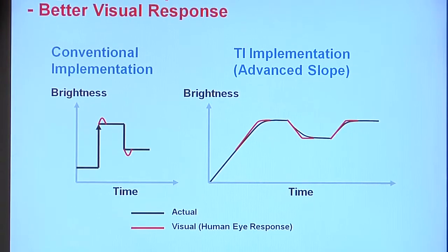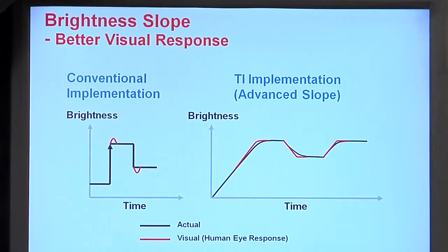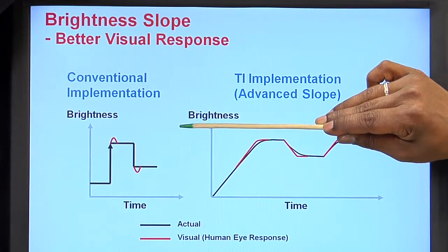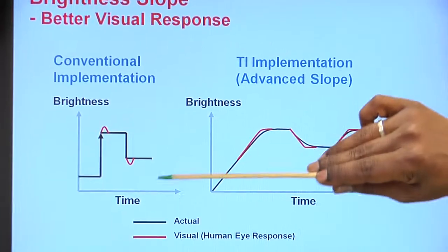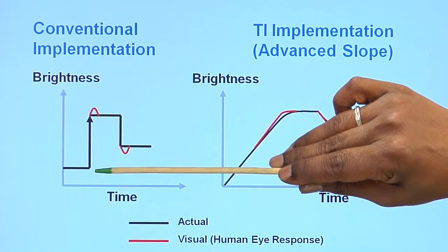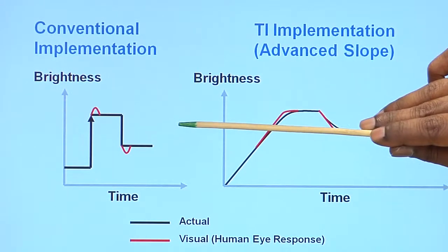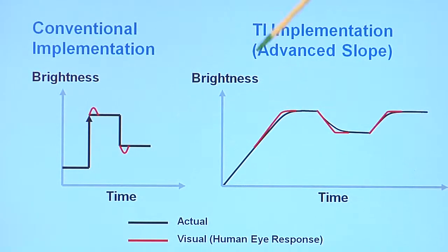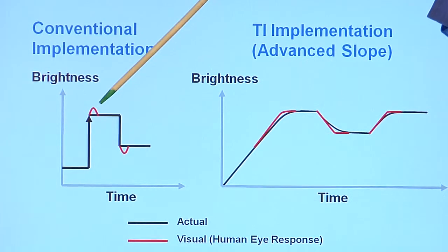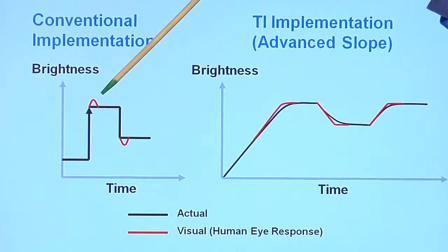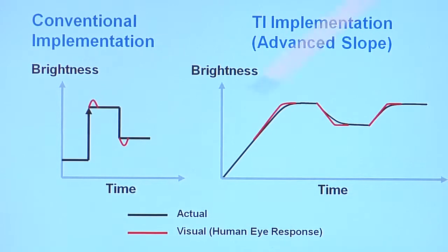From a better visual experience standpoint, we have a feature called Brightness Slope. Here is how a conventional implementation is shown. When the user changes the brightness, at any point in time, the output behaves in a step fashion, going up or even going down. However, when the brightness reaches the target value, the human eye perceives some sort of a glitch as shown in the red blimps here.